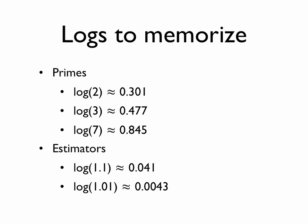So we have these primes, 2, 3, and 7, that we've memorized the logs for, as well as these estimators, this 10% and 1% estimator. So we have five numbers now to memorize. Let's do some examples.